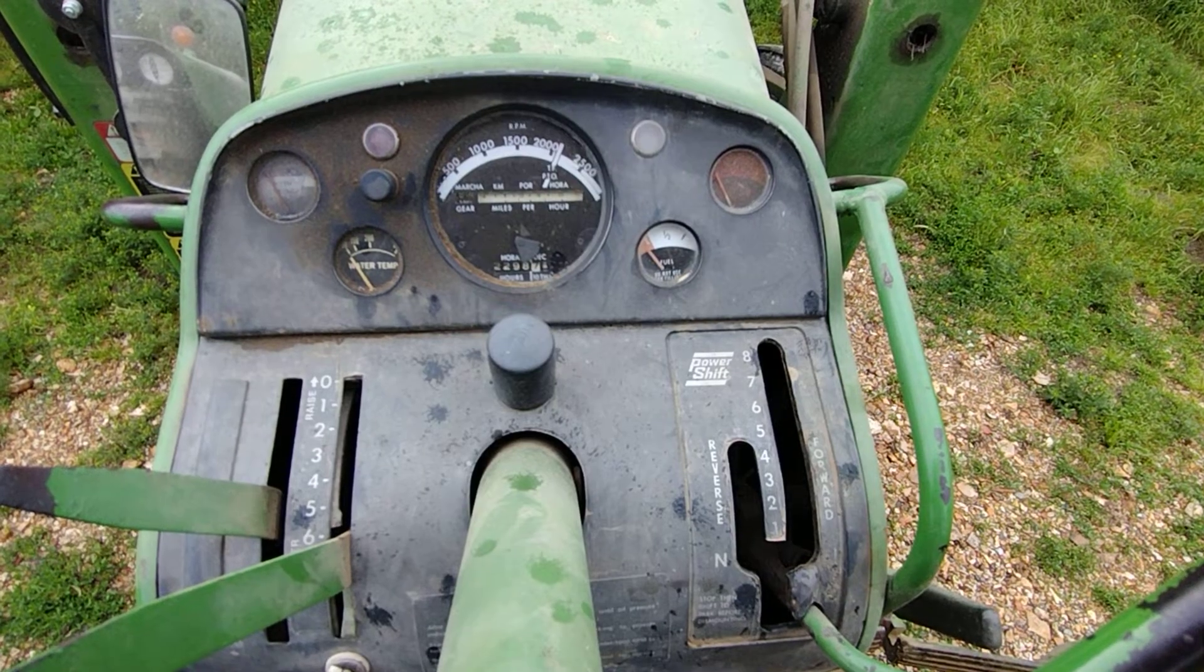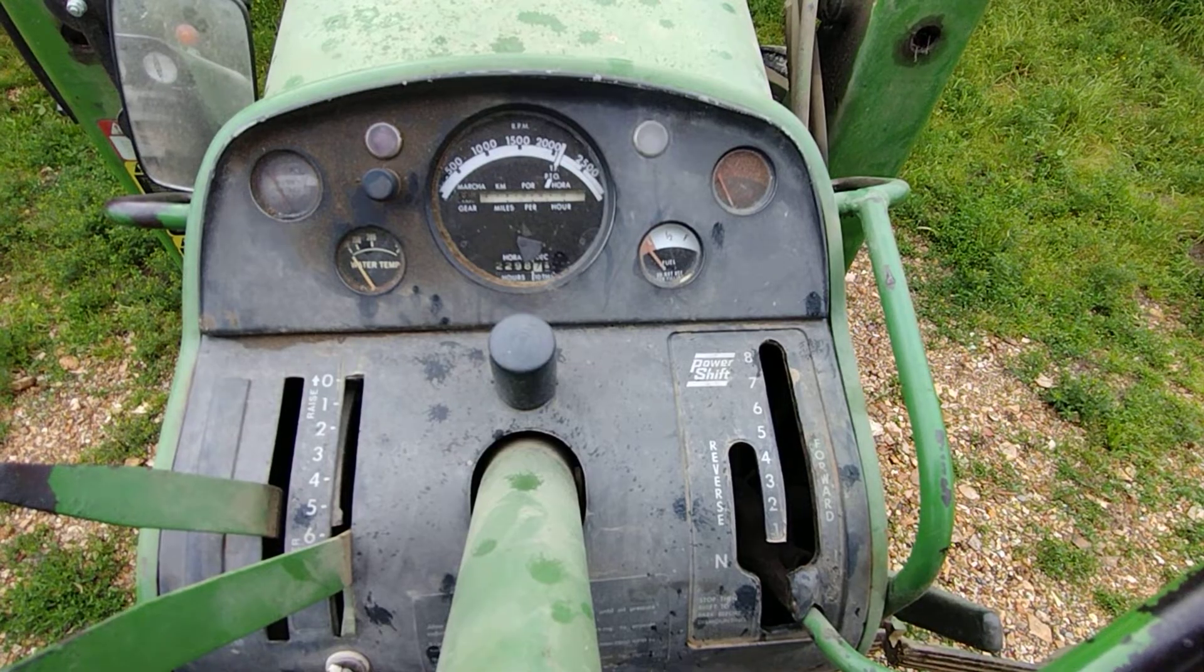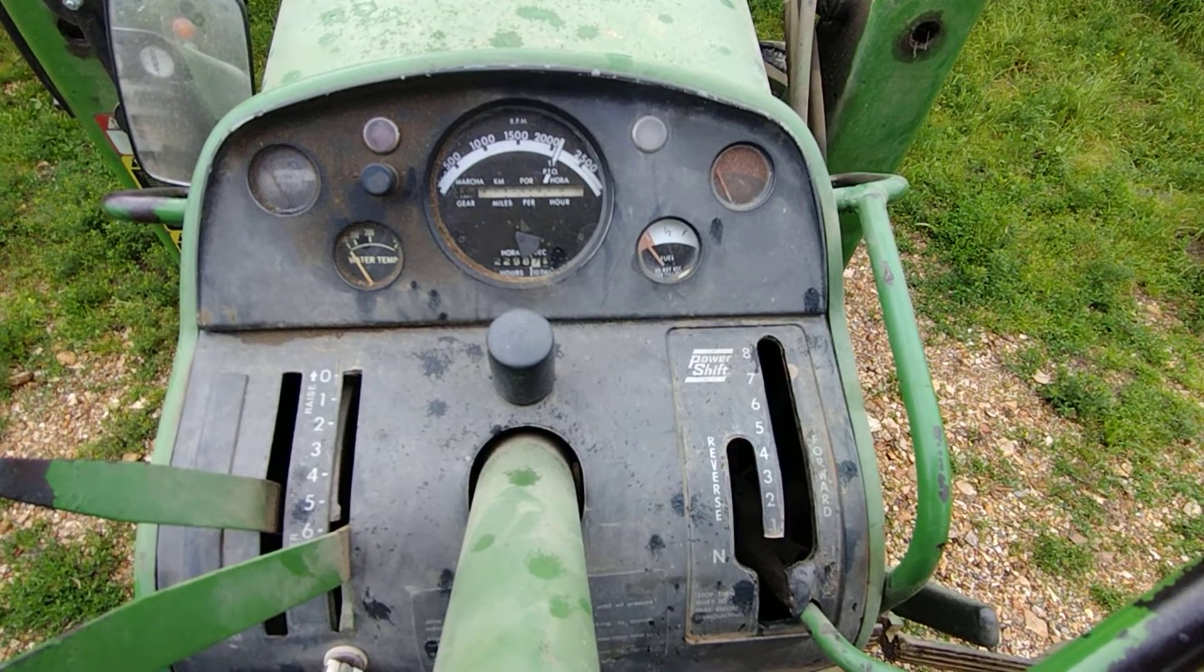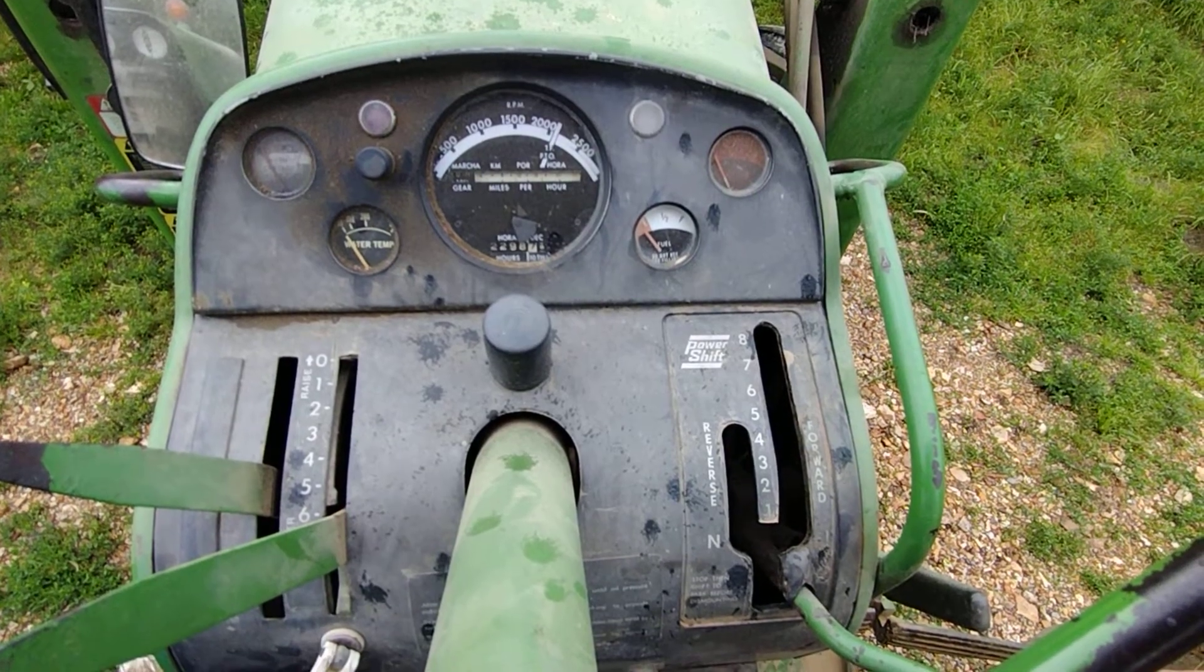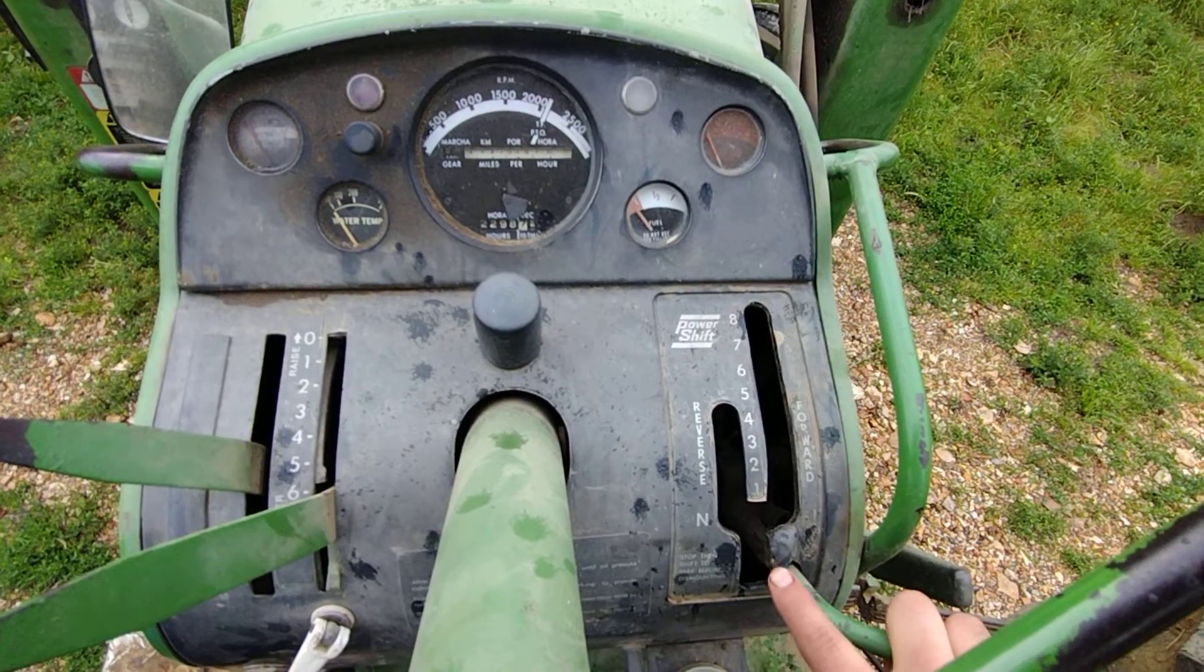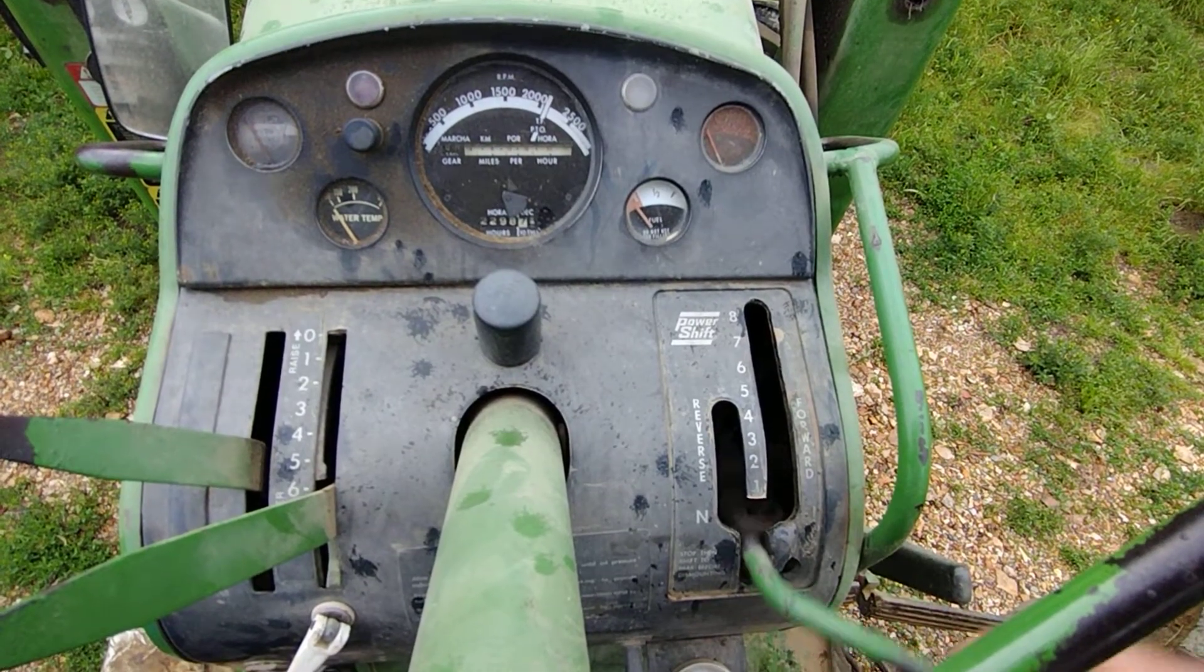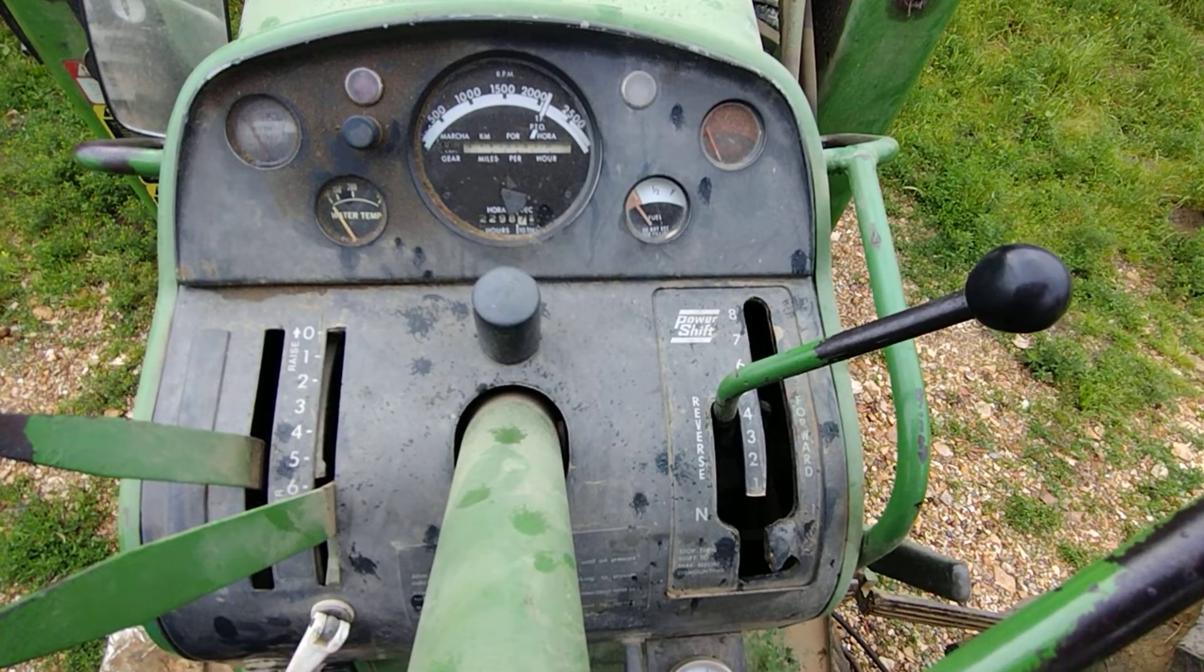Now we have the power shift transmission. Raining on me a little bit, but we'll see if we can get through it. I didn't make any kind of paper to help show the power shift transmission shift pattern because there's really not much to it. We have park down here. We have eight forward gears in line, and four reverse gears in line.